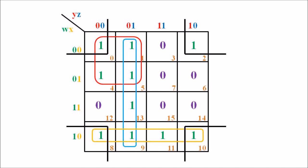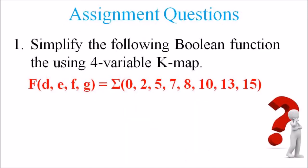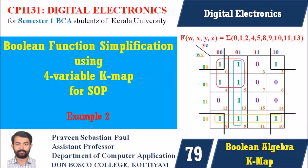I hope you understood this example. Here is an assignment question: simplify the Boolean function f(d, e, f, g) = Σ(0, 2, 5, 7, 8, 10, 13, 15) using a four-variable Kmap. In the upcoming lecture we will discuss a third example for Boolean function simplification using a four-variable Kmap for SOPs, which will be the final lecture on four-variable Kmap solutions. See you soon — goodbye, thank you, and all the best.